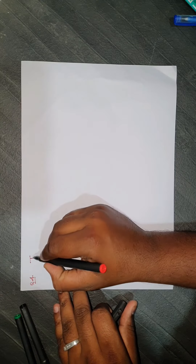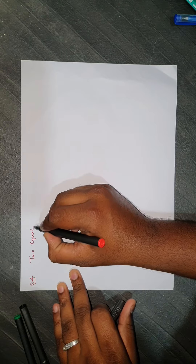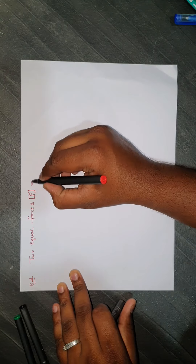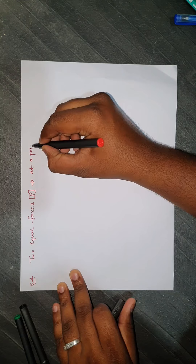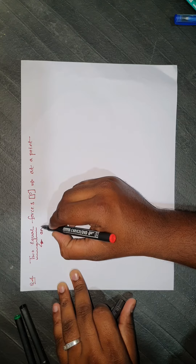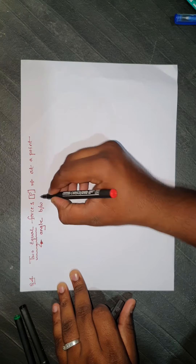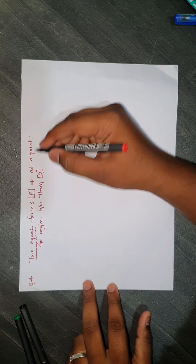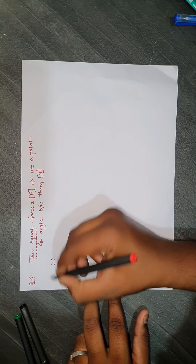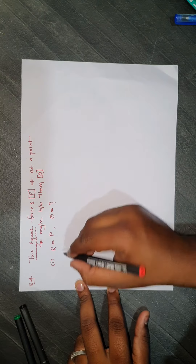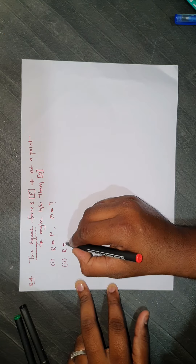In question number four, there are two equal forces, each of magnitude P, acting at a point. We need to calculate the angle between the two forces — let us assume this angle is theta. The first condition: if the resultant is P, what is the angle between the two forces?